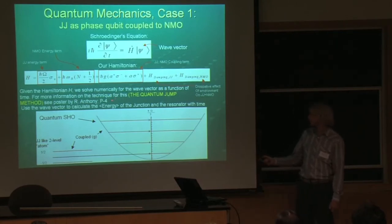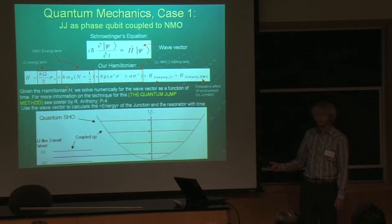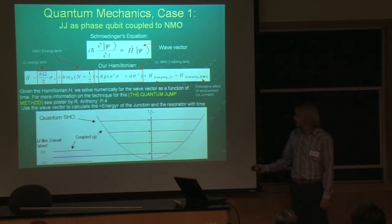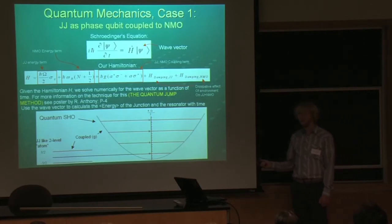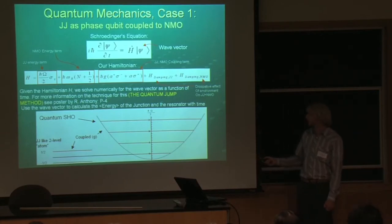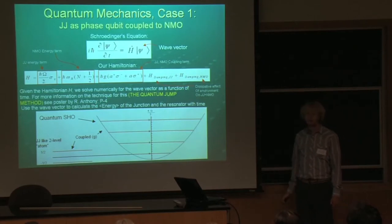For more information on this technique, check out the quantum jump method poster — P4, Ron Anthony's poster. This is the system we were studying, and we can solve for the wave vector, and then from the wave vector we can get plenty of interesting quantities, like the expectation value of the energy, which is basically a quantum mechanical version of an average.